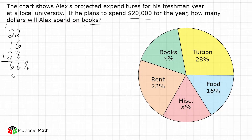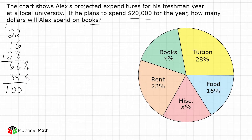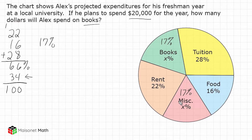The remaining parts must be 34%, because that is the only thing you can add to 66% to make 100%. So we know that books plus the miscellaneous items total 34%. Now, both of these are equal in value because each one of them says X%. Whenever you have the same variable — X and X, or Y and Y — they represent the same number. So we can equally divide this 34% into two parts, and that would be 17%. Alex spends 17% on books and 17% on miscellaneous items.